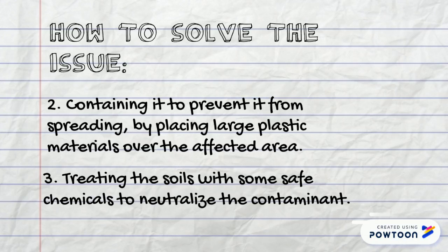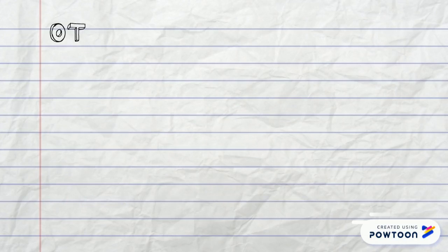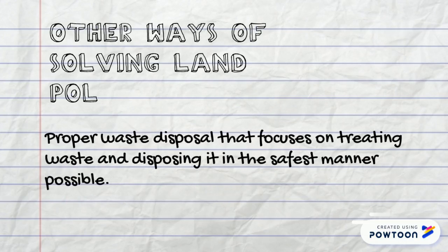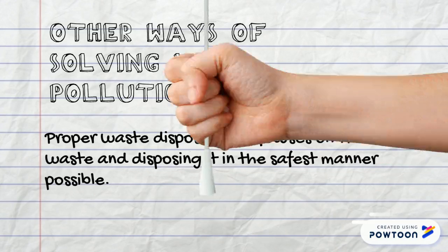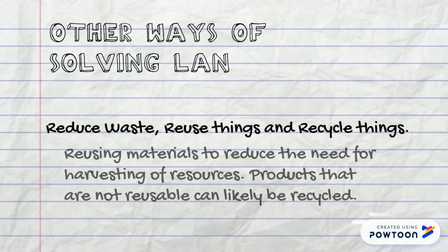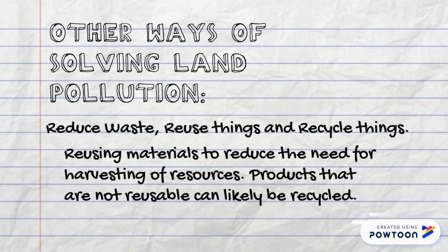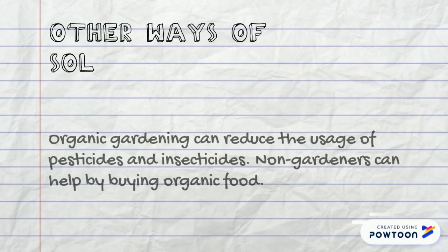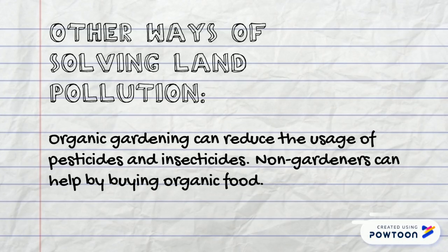Three, treating the soil with safe chemicals to neutralize the contaminant. Other ways of solving land pollution: proper waste disposal that focuses on treating waste and disposing of it in the safest manner possible; reduce, reuse, and recycle materials to reduce the need for harvesting new resources; and organic gardening, which can reduce the usage of pesticides and insecticides — consumers can help by buying organic food.